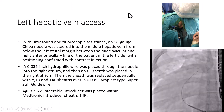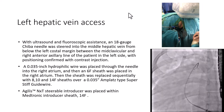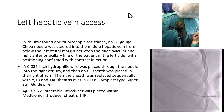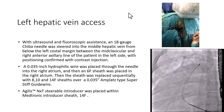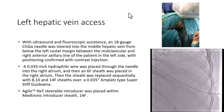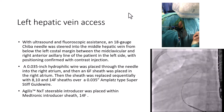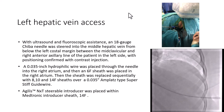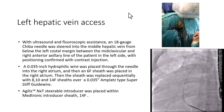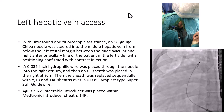With ultrasound and fluoroscopic assistance, an 18-gauge Chiba needle was steered into the middle hepatic vein from the left costal margin between the mid-clavicular and right anterior axillary line on the left side of the patient, with positioning confirmed by contrast injection. A 0.035-inch hydrophilic wire was placed through the needle into the right atrium, and then a 6-French sheath was placed in the right atrium.